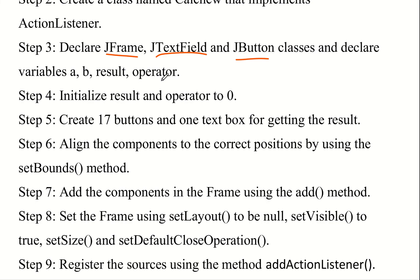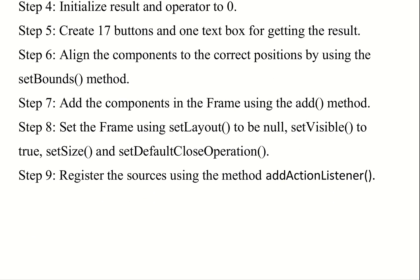The operator can be plus, minus, star, or division. Initialize the result and operator to 0. Then create 17 buttons. One text field for displaying the result. Align the components to the correct position using the setBounds method, which allows us to set correct alignment.